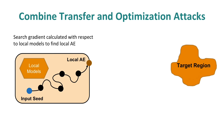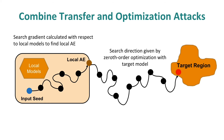To combine the two attacks, we first do a transfer attack and generate the local adversarial example, then check if it transfers to the target model. If it transfers, then it lies in the target region and the attack is done. But we are more interested in the case when it does not transfer. Instead of giving up when the transfer fails, we start our optimization attack from the failed local adversarial example rather than starting from the original input seed. Our hypothesis is the failed local adversarial example is closer to the target region than the original input seed, so starting from there improves attack efficiency.